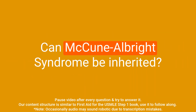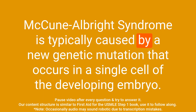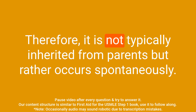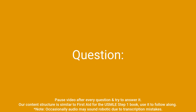Question: Can McCune-Albright syndrome be inherited? Answer: McCune-Albright syndrome is typically caused by a new genetic mutation that occurs in a single cell of the developing embryo. Therefore, it is not typically inherited from parents but rather occurs spontaneously. In rare cases, it can be inherited if caused by germline mosaicism.